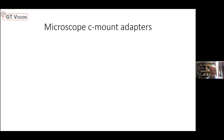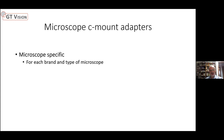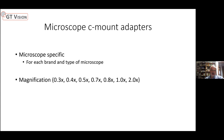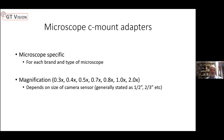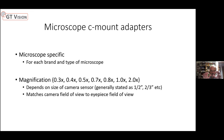So how do you decide? The c-mount adapter is microscope-specific — there'll be one for each brand of microscope and often each type. For instance, Leica will have a c-mount adapter for their upright microscopes, a different one for their inverted microscopes, and a different one for their stereo microscopes. The magnification also matters: you have a broad range from 0.3x up to 2x. You need to match the camera sensor size — generally stated in fractions of an inch — so the camera field of view matches the eyepiece field of view.